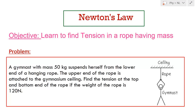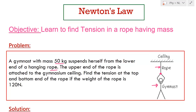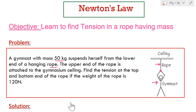This problem says: a gymnast with mass 50 kg suspends herself from the lower end of a hanging rope. The gymnast hangs from the lower end of this hanging rope, and the mass of the gymnast is given as 50 kg.